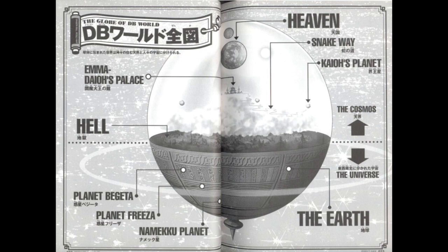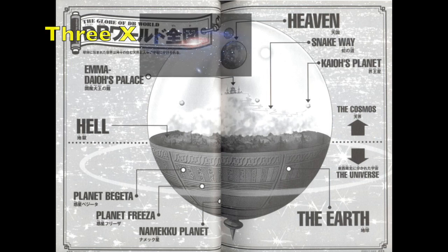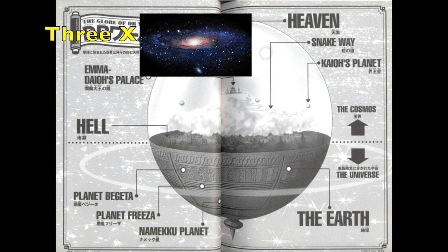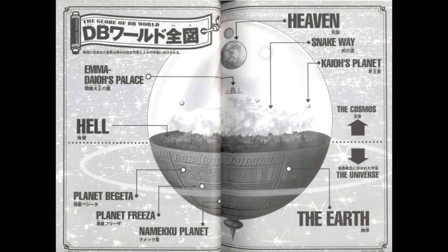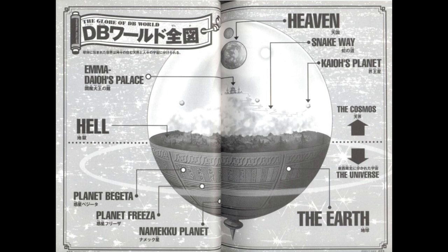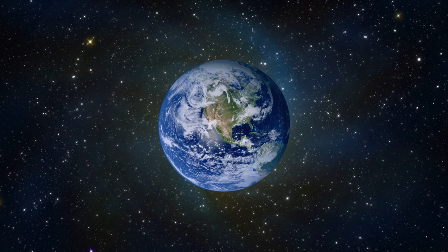So Universe 7, as we see it, is three times the equivalent of our real life universe — a universe within a universe, or multiple universes within a universe. Hence why it is called a macroverse. Let's now get into how big the universe is and what it contains.